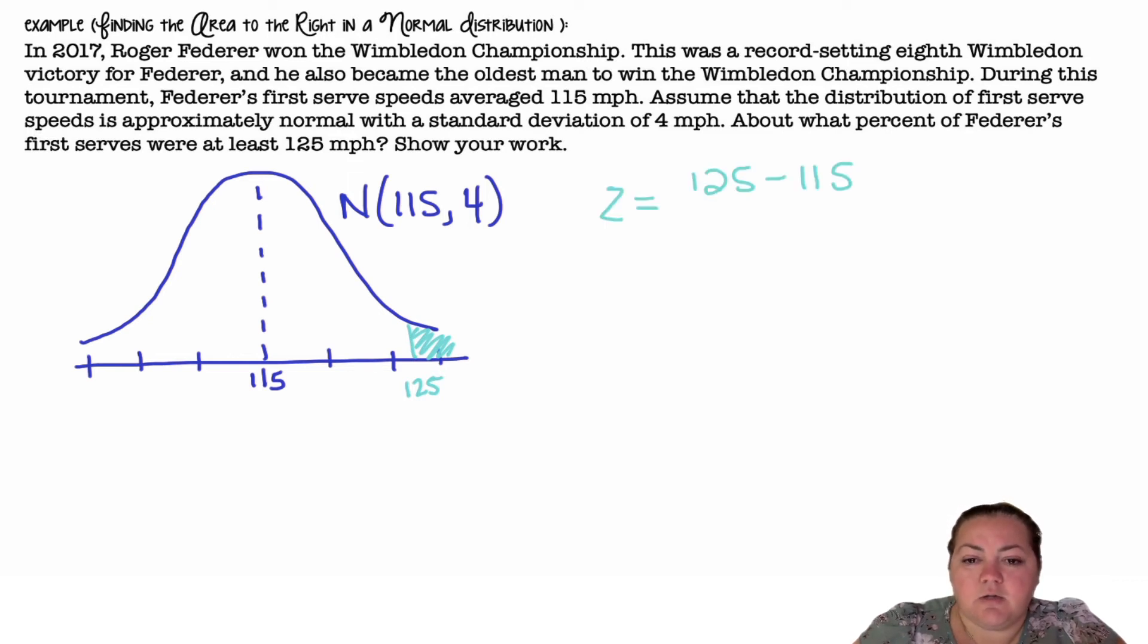Alright, so I'm going to find the z-score that corresponds with that. My value is 125 minus the mean divided by the standard deviation gives me 2.5. So I could go on table A, and I could find 2.5 on the left side, 0.00 on the top, and match them up, and find the, that would give me the area to the left. I'd have to subtract that from 1 to find the area on the right.